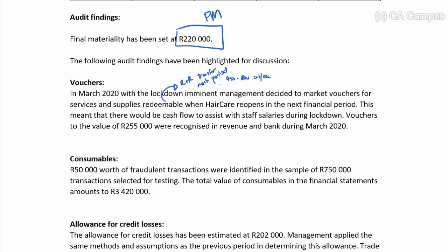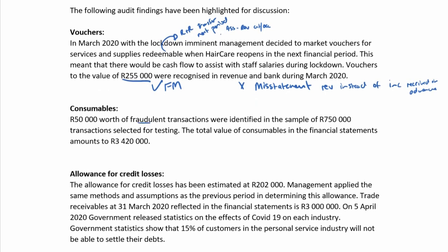The vouchers were intended to provide cash flow to assist with staff salaries during lockdown. Vouchers to the value of R255,000 were recognised in revenue and bank during March 2020. This confirms the risk — there is a misstatement because they recognised revenue instead of income received in advance. This misstatement of R255,000 exceeds final materiality of R220,000. Regarding consumables, R50,000 worth of fraudulent transactions were identified, indicating a potential reportable irregularity and fraud.